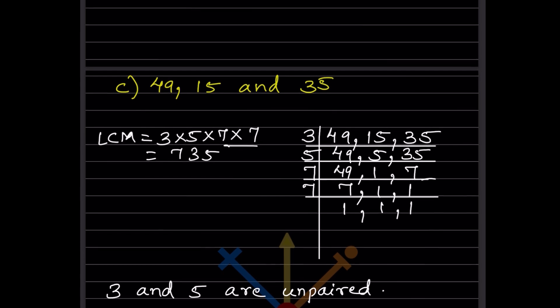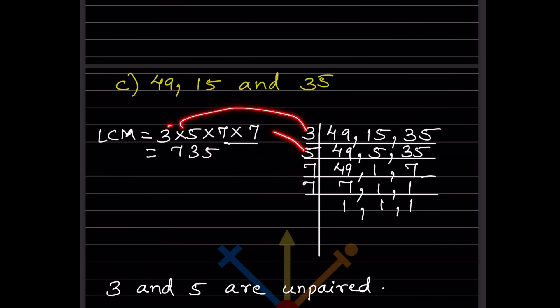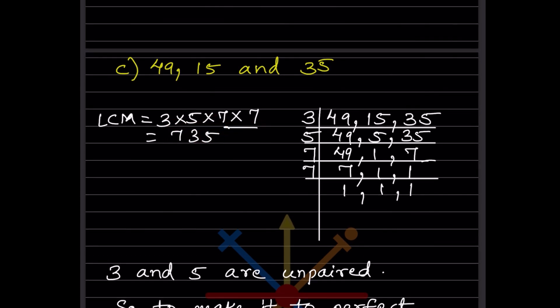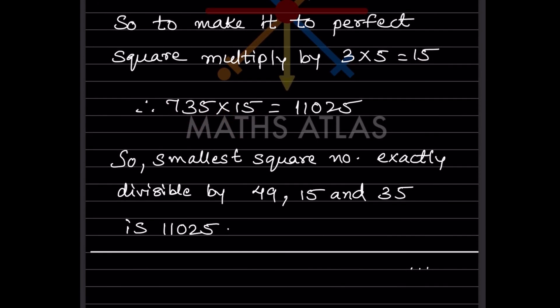For 14, 15, and 35: not divisible by 2, so use 3 and 5 and 7. The LCM works out to 3×5×7² = 735. When paired, 7 is paired but 3 and 5 are unpaired. Multiply by 3×5 = 15 to make a perfect square. So 735 × 15 = 11025 is the smallest square number exactly divisible by 14, 15, and 35.